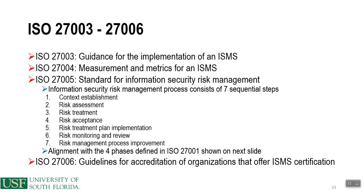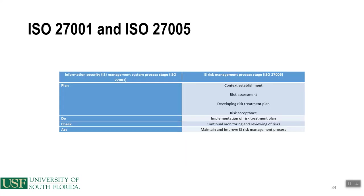An alignment with the four phases defined in ISO 27001 is shown. The planning phase in 27001 is broken down in 27005 as context establishment, risk assessment, developing risk treatment plan, and risk acceptance. For the do phase, there's implementation of risk treatment plan. For the check phase, there's continual monitoring and reviewing of risks. The act phase is to maintain and improve the IS risk management process. ISO 27006 provides guidelines for accreditation of organizations that offer ISMS certification.